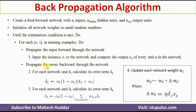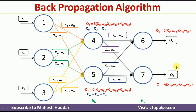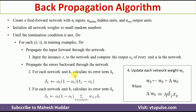The next step is to propagate the errors backward through the network. We have already calculated the outputs. Once we calculate these outputs, we need to calculate the error terms. The error term is propagated back to all the hidden layer units, and using that error term we will modify the weights. First we calculate the error at the output units, and then we calculate the error at the hidden units.